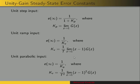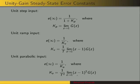The parabolic input steady state error constant is Ka, and the final value for the error is one over Ka. Note there is a typo on screen which should read Ka. Ka is equal to one over the square of the sampling period times the limit as Z approaches 1 of Z minus 1 squared times G of Z.